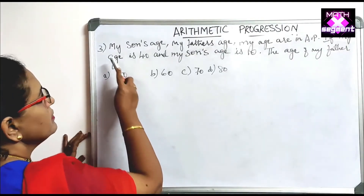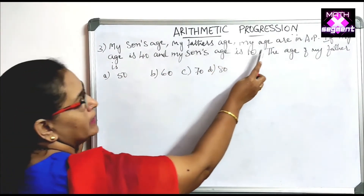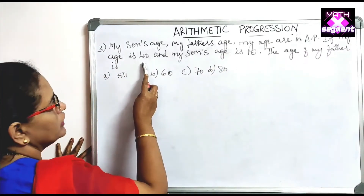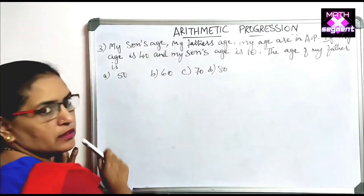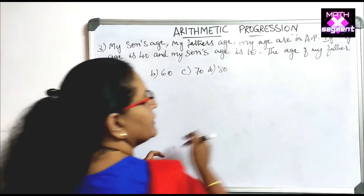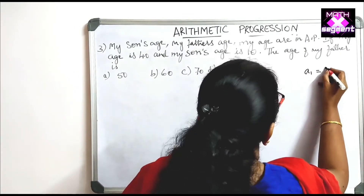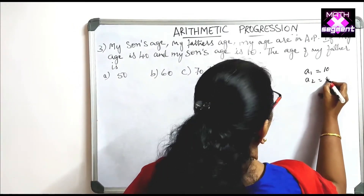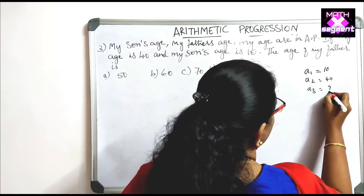The next question: my son's age, my age, and my father's age are in AP. If my age is 40 and my son's age is 10, what is my father's age? So the three values in AP are son's age 10, my age 40, and father's age unknown. We need to find the third term.